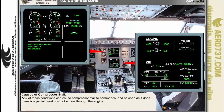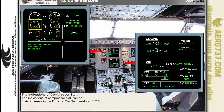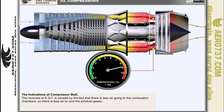Any of the conditions just mentioned can cause a compressor stall to commence, resulting in a partial breakdown of airflow through the engine. The indications of compressor stall can include: fluctuations in engine RPM; an increase in the vibration level of the engine which can generate noise audible in the cockpit depending on whether the engines are wing mounted or rear fuselage mounted; and an increase in exhaust gas temperature (EGT). This increase in EGT is caused by less air going to the combustion chambers, hence less air to cool the exhaust gases.